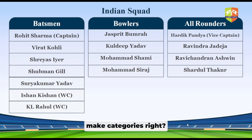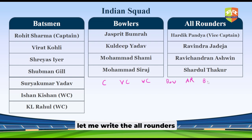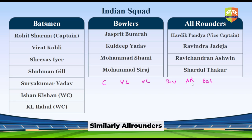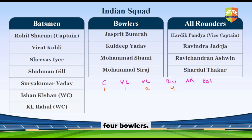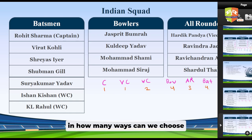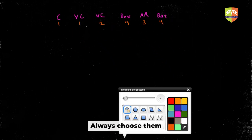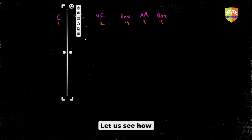Let us make categories: captain (1), vice captain (1), wicket keepers (2), bowlers (4), all-rounders other than vice captain (3), and pure batsmen other than captain and wicket keepers (4). Captain and vice captain are always chosen. We need to make different cases iterating systematically, handling each condition one by one. The first condition is based upon the wicket keepers — we must pick at least one out of two.